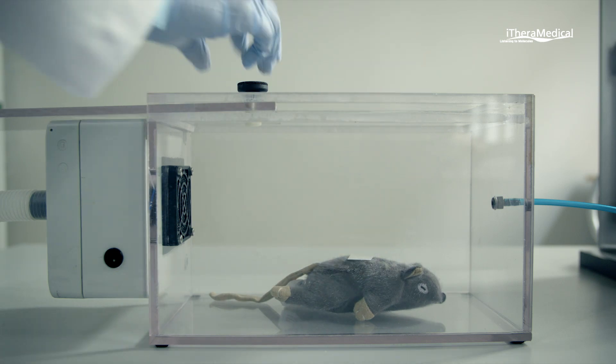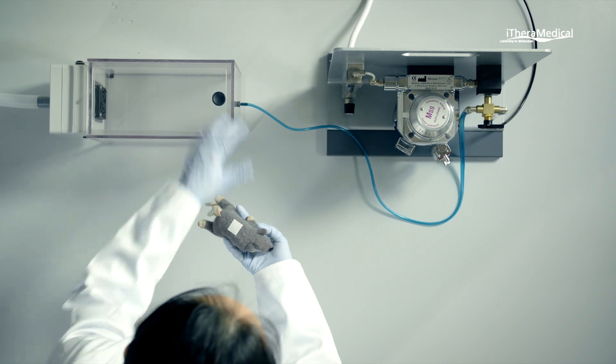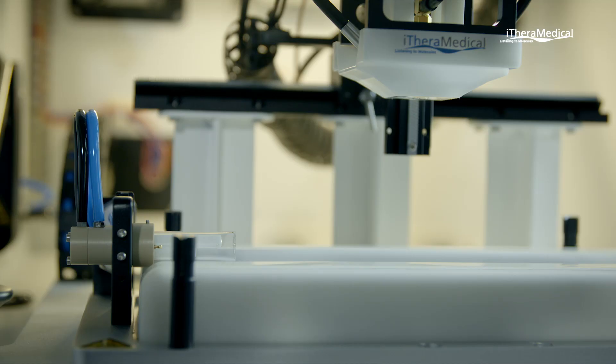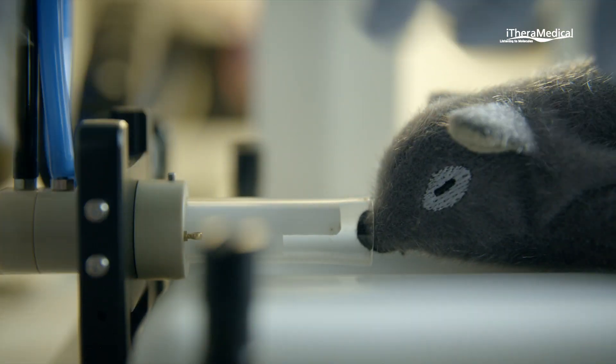Isoflurane is used to anesthetize the animal. Once the animal is anesthetized, anesthesia is switched to the RSOM Explorer, and the animal is transferred to the small animal bed inside the imaging chamber.